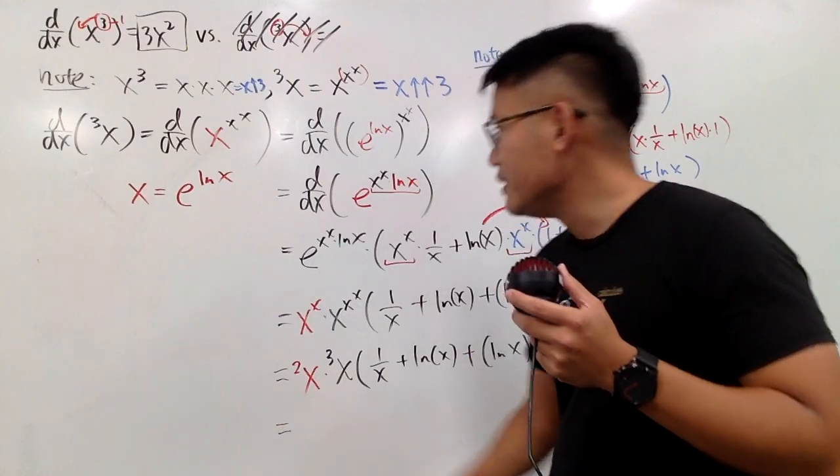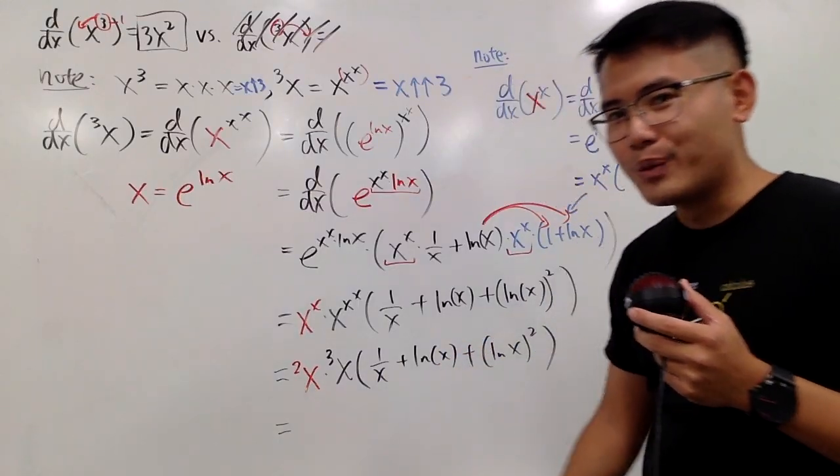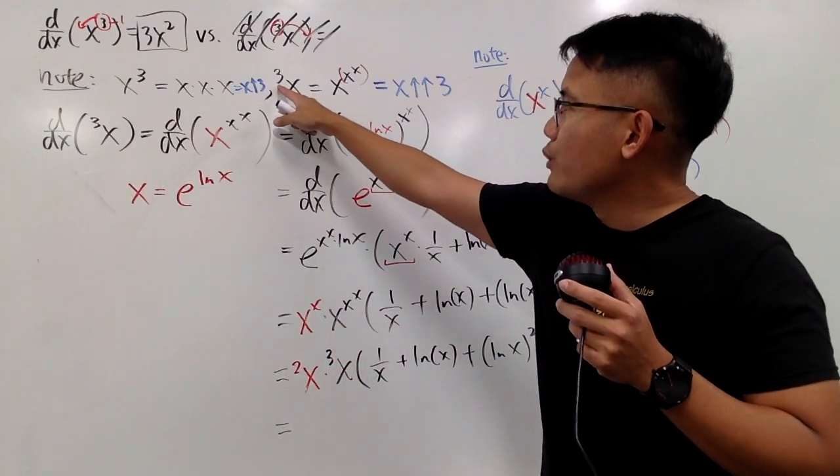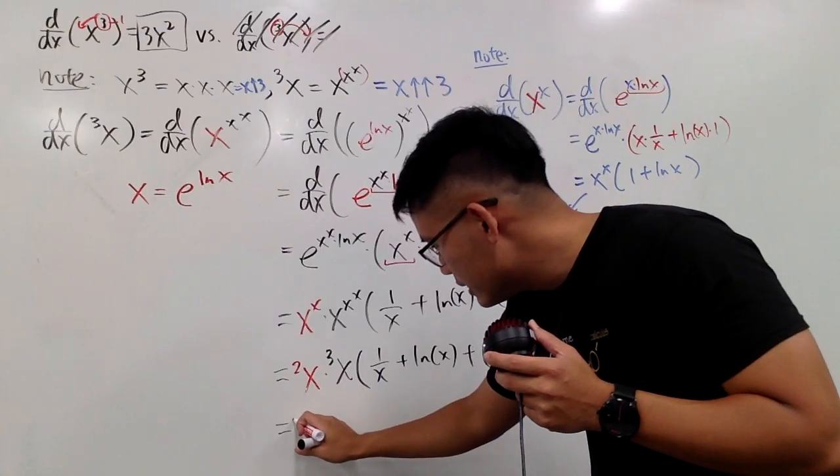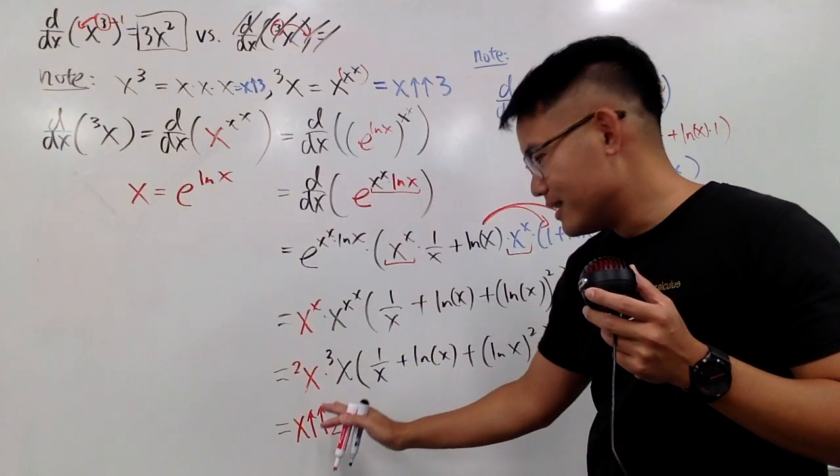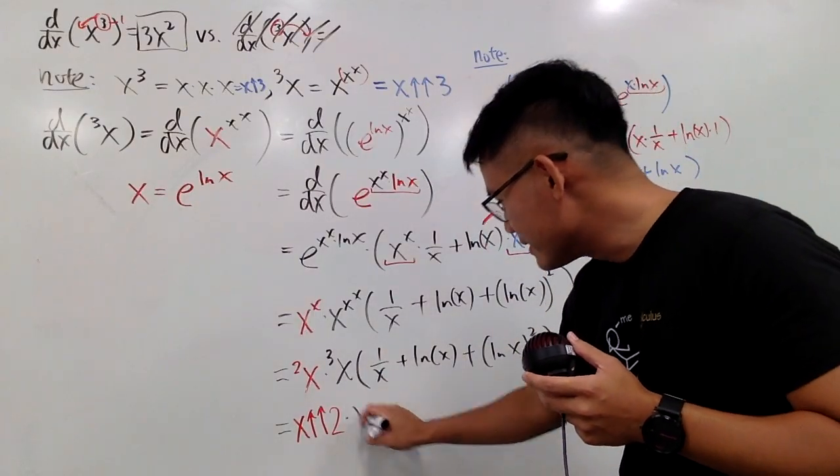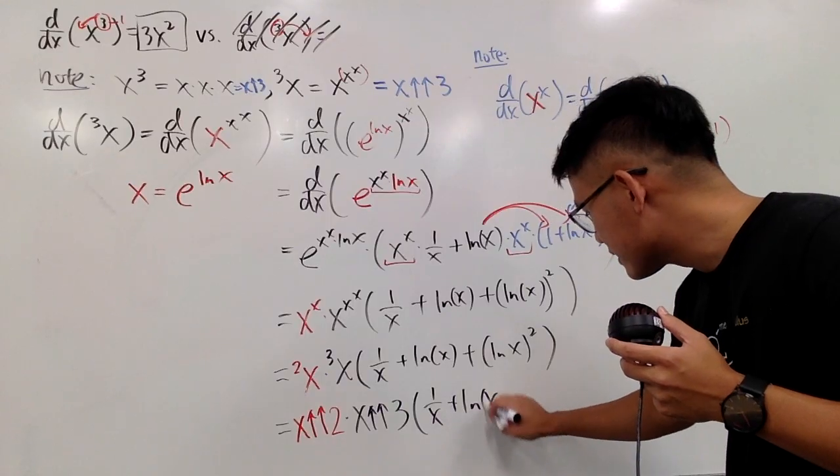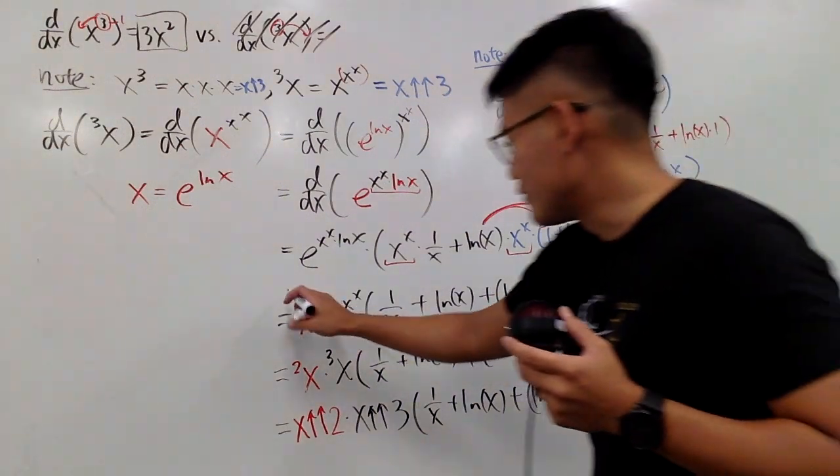And if you would like, you can also use the up arrow notation. So for this one in red, how should we write it? Well, this means x to the x power. And if you look back, when you have 3 and an x right here, you pretty much do x to the up arrow twice and then that, right? So this right here is x double up arrow. Not arrow. I haven't made any arrow yet. So x double up. Double arrow up. Or up. Arrows. Arrows. Ah! Yeah. And then multiply by this, which is x. Arrows. Arrows. And then 3. And then multiply by the rest. 1 over x plus ln x plus ln x squared. OK.